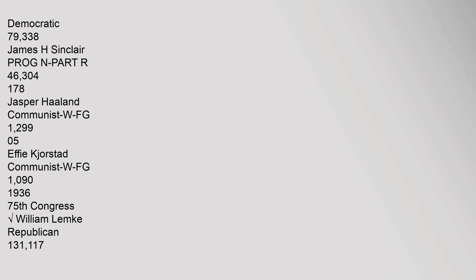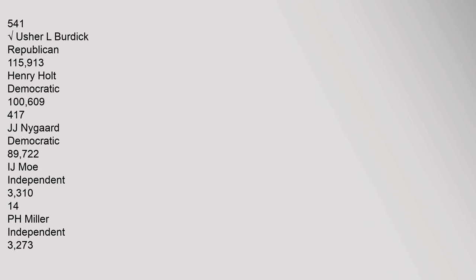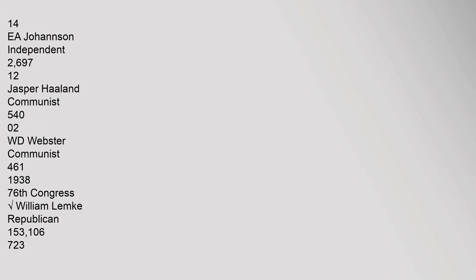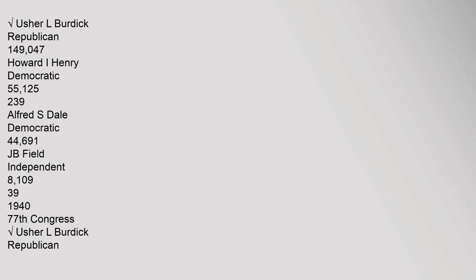1936 (75th Congress) — William Lemke, Republican: 131,117 (54.1%); Usher L. Burdick, Republican: 115,913; Henry Holt, Democratic: 100,609 (41.7%); J.J. Niggard, Democratic: 89,722; I.J. Moe, Independent: 3,310; P.H. Miller, Independent: 3,273; E.A. Johansson, Independent: 2,697; Jasper Holland, Communist: 540; W.D. Webster, Communist: 461.